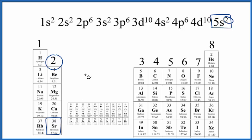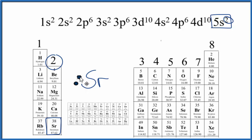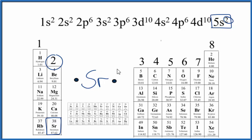If we wanted to write the Lewis structure, we would just write Sr, and you could put two valence electrons next to the element symbol. We put them together here because they're in the 5s². Often though you'll see teachers ask you to write them like this. Either way, strontium has two valence electrons — this is the Lewis structure here.